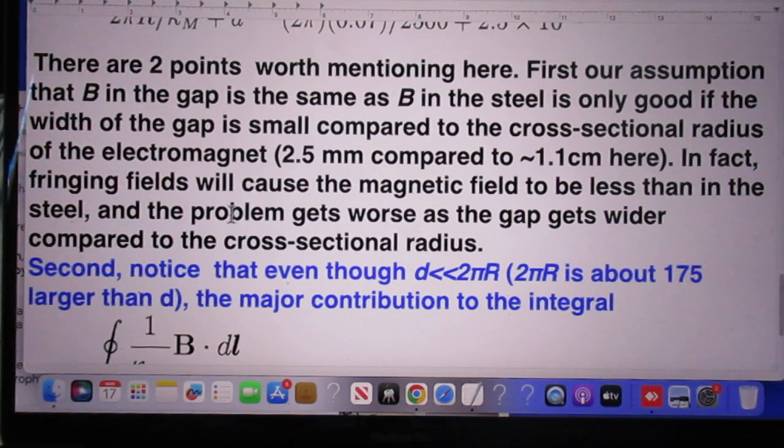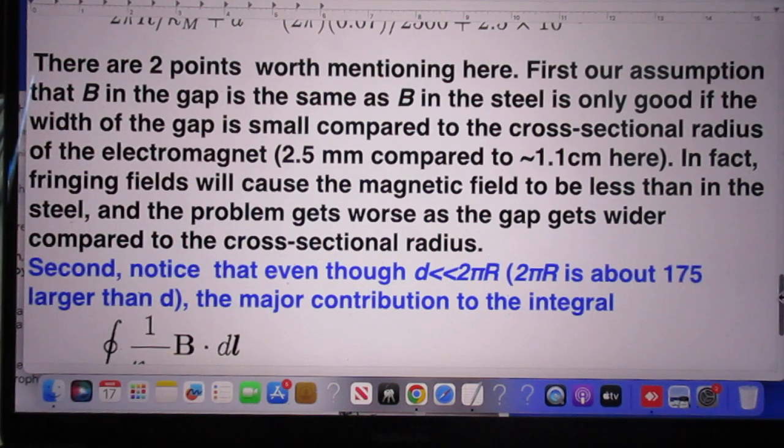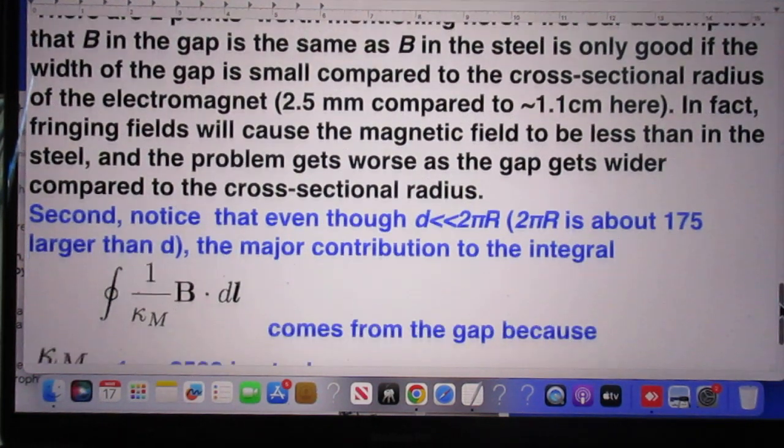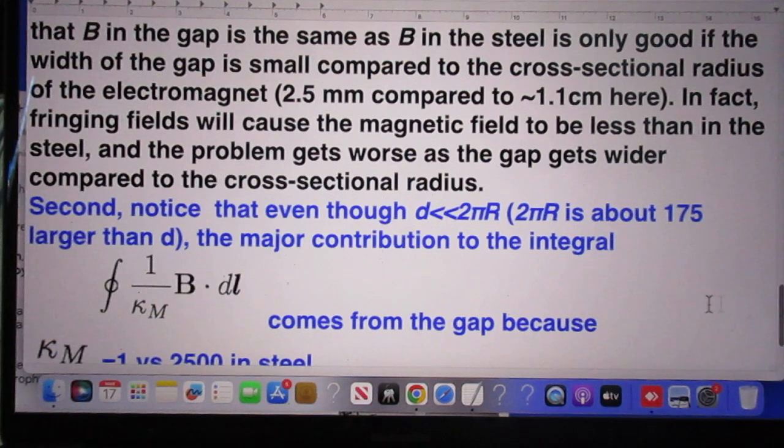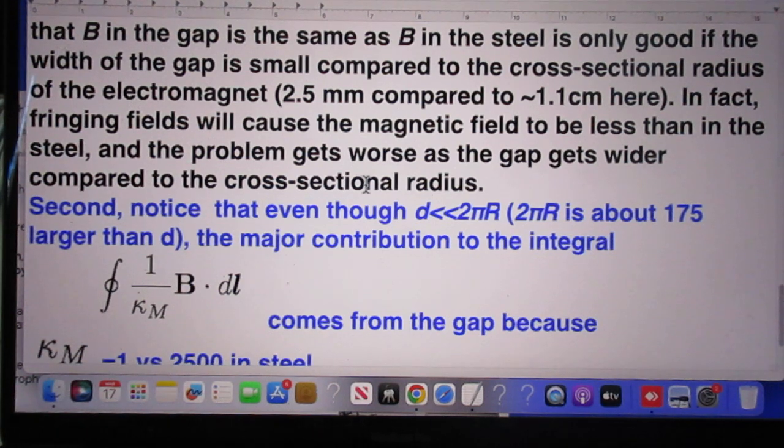In fact, fringing fields will cause the magnetic field to be less than in the steel, so you can no longer assume that the magnetic field in the gap is the same as in the steel. It bulges out in the gap and therefore its field will be less than the magnetic field in the steel. And the problem gets worse as the gap gets wider compared to the cross sectional radius.